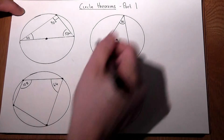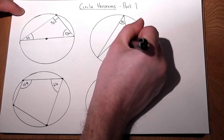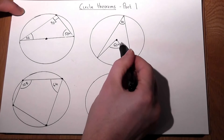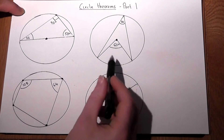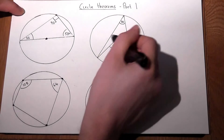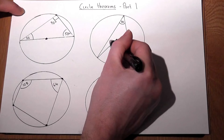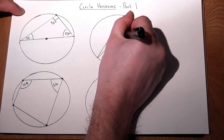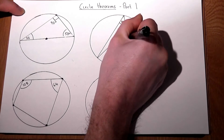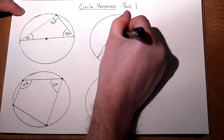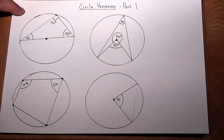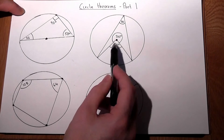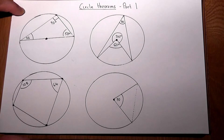You could therefore find the reflex angle because angles at a point add to 360, so that big angle there would be 300 degrees. So the angle formed at the center is twice the angle formed at the circumference.